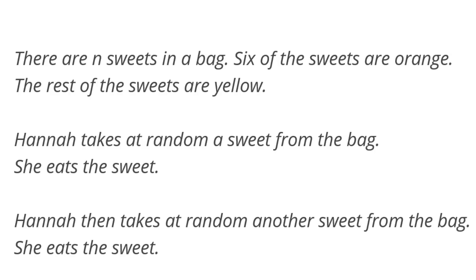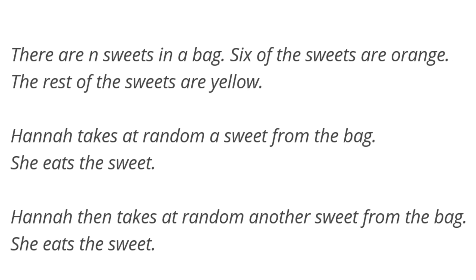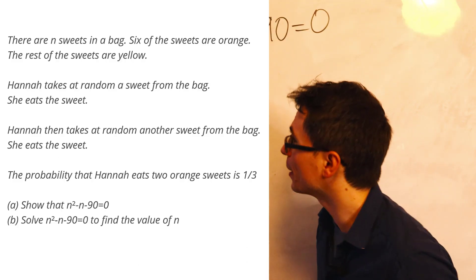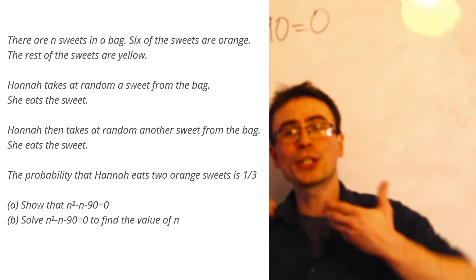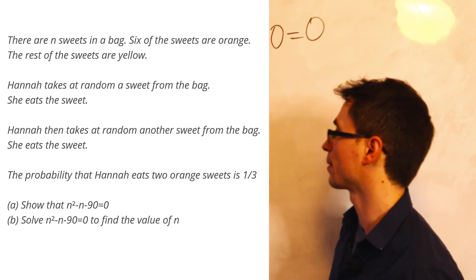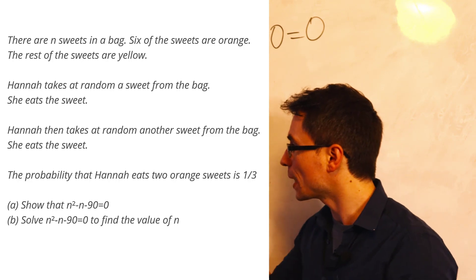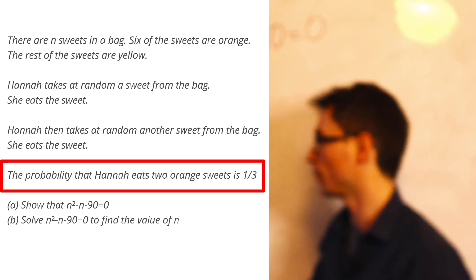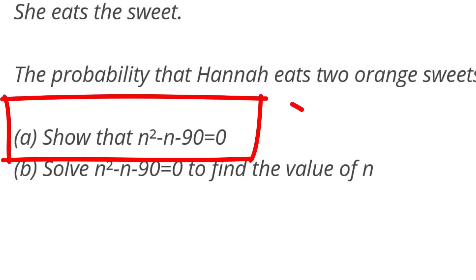There are N sweets in a bag. Six of them are orange, the rest are yellow. Hannah takes a sweet at random from the bag and then she takes a second sweet. Given that the probability that she eats two orange sweets in a row is one over three, we need to show that this expression here is true.